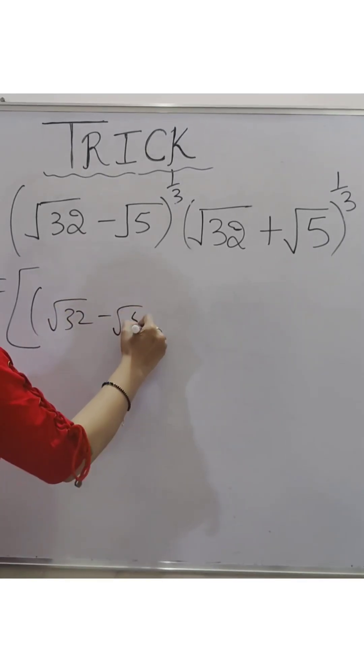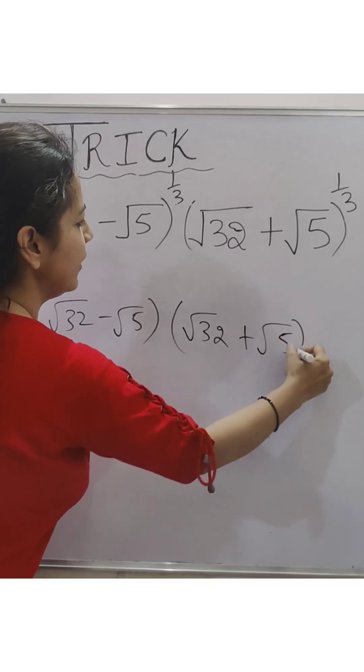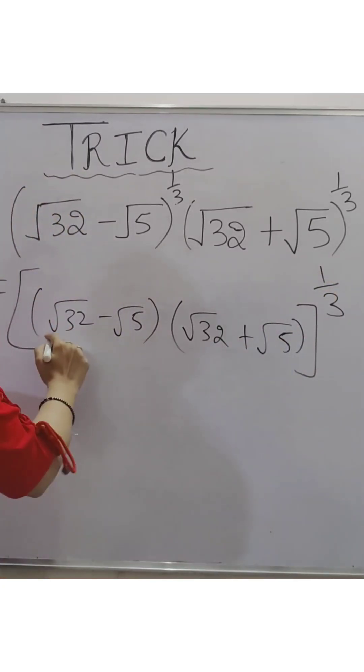32 minus root 5 inside the bracket and the next bracket root 32 plus root 5. And the whole power 1 by 3 you will write one time. Observe,